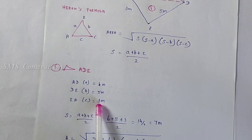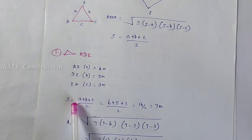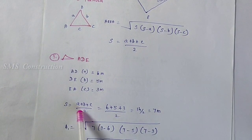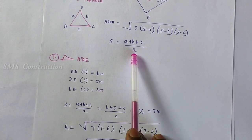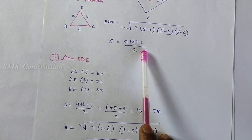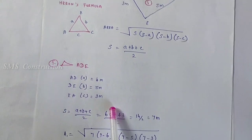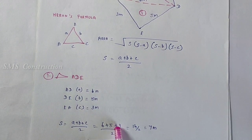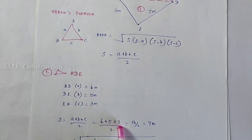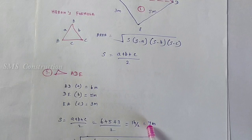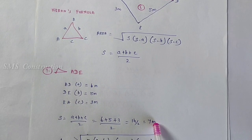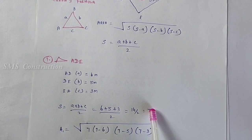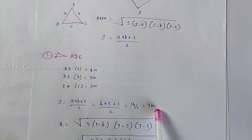In value one, we are going to use S. The formula is: S equals A plus B plus C divided by 2. The value is 6 plus 5 plus 3, and the answer is S equals 7 meters.